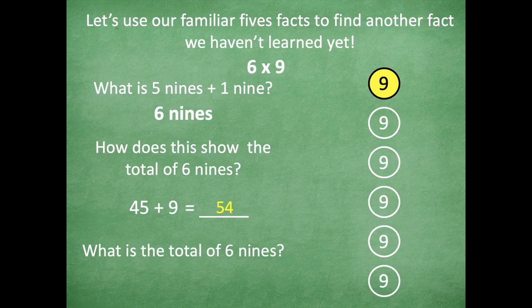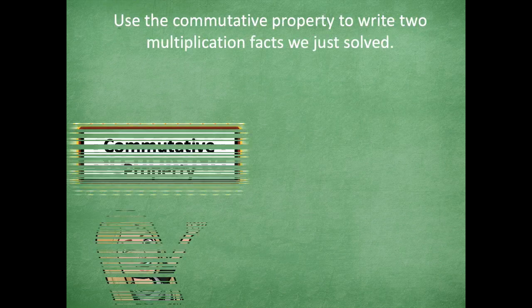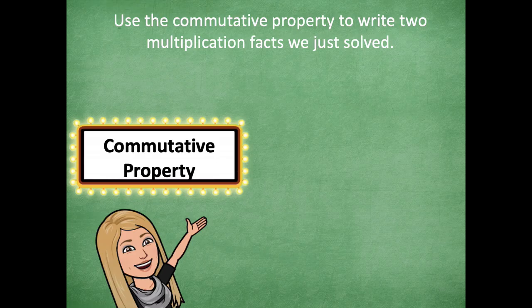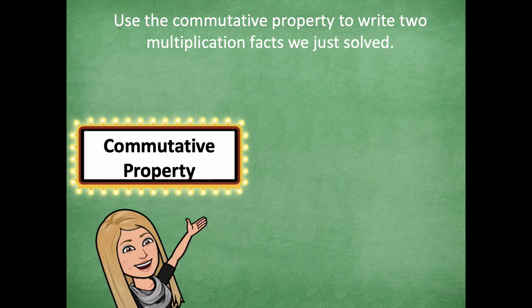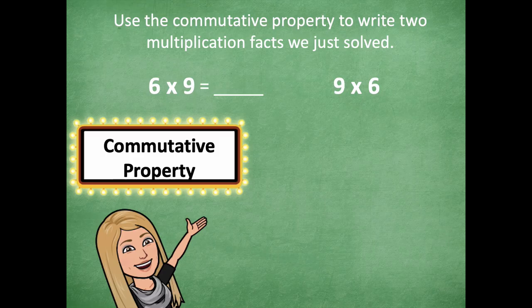Anytime, friends, you can use those fives — use them, it'll help you out. So let's use the commutative property to write the two multiplication facts we just solved. Tag, you're it — pause the video and write the two facts. We talked about six nines, so six times nine is one of them — hint, hint — you have to come up with the other. Six times nine and nine times six both equal 54. If you know six times nine, you automatically know nine times six.